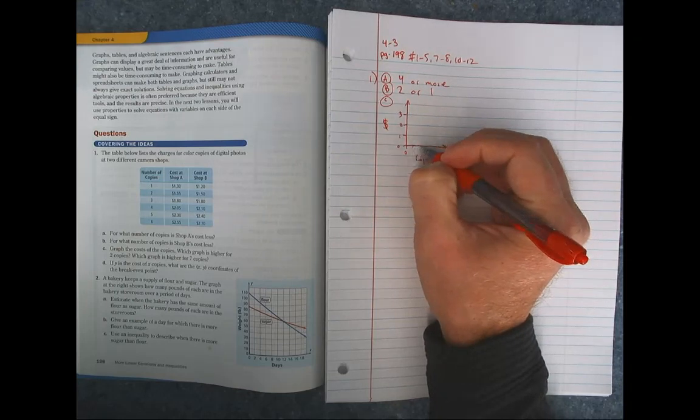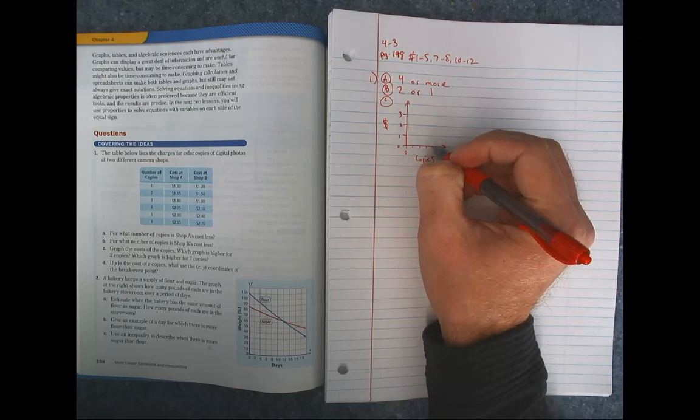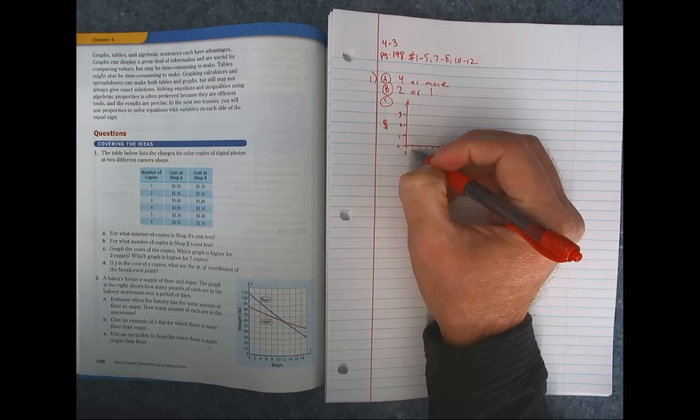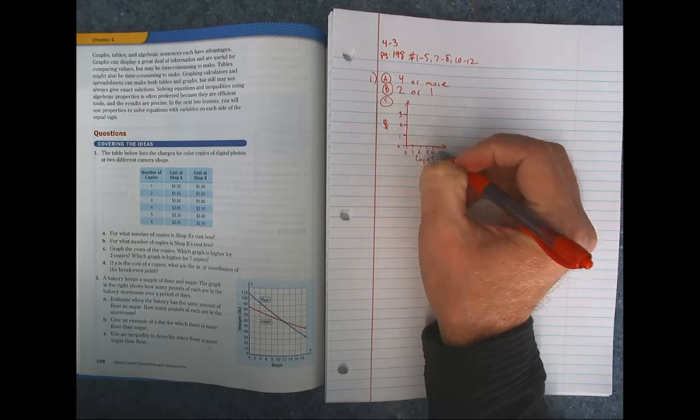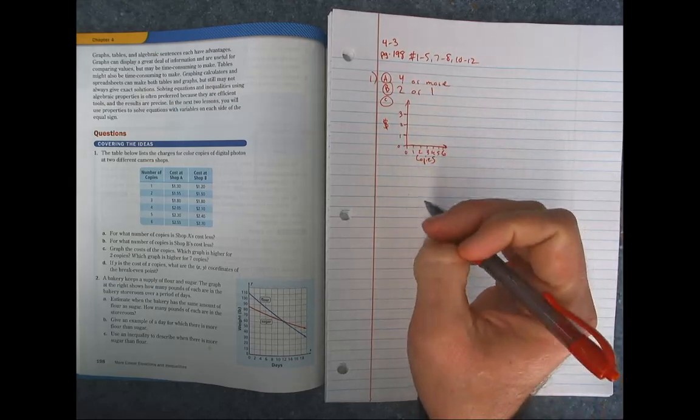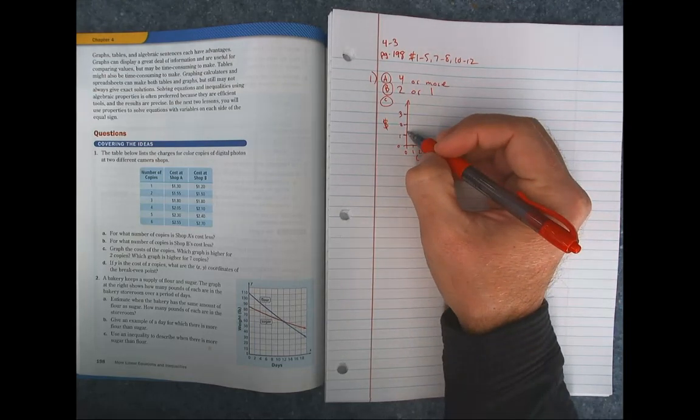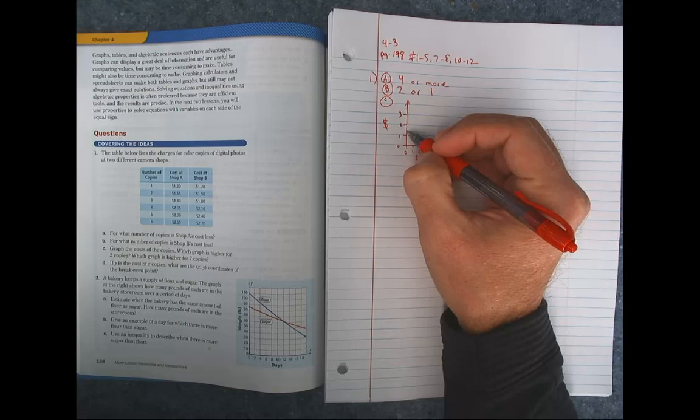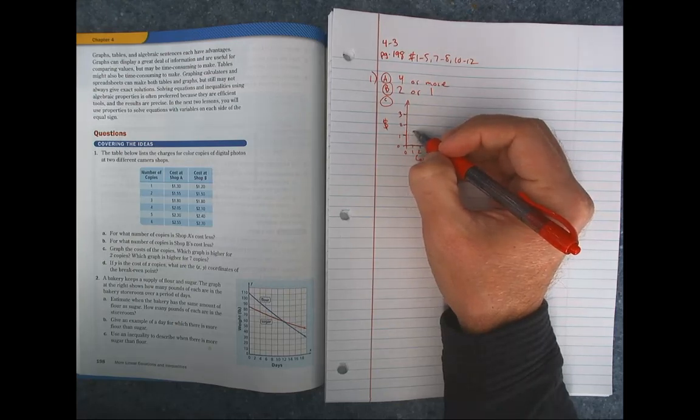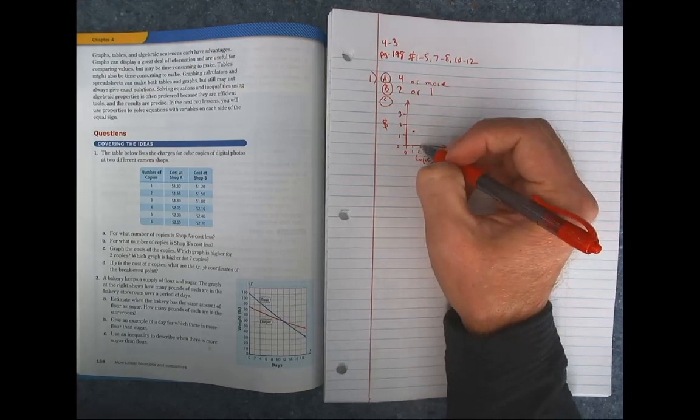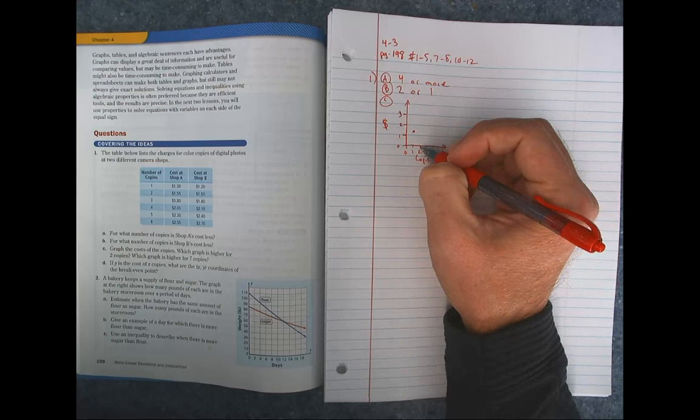So 1, 2, 3, 4, 5, 6. All right, starting with A. It's $1.30. So that would be a little bit less than half at 1. So right here. And then for 2, we're at $55. So that's going to be pretty close to the middle of 1 and 2.